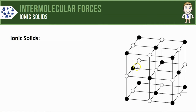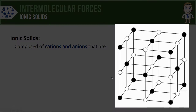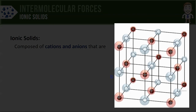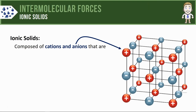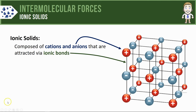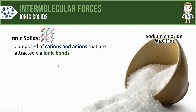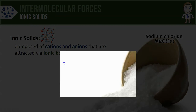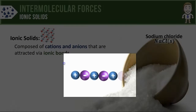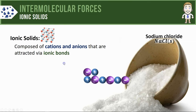Here on my general form of a lattice structure, we can see that ionic solids are composed of cations and anions, and like all cations and anions, they're held together with ionic bonds. Sodium chloride, or common table salt, is a great example of an ionic solid — it's made of a repeating array of positive sodium cations and negative chloride anions, which you can see being arranged here.